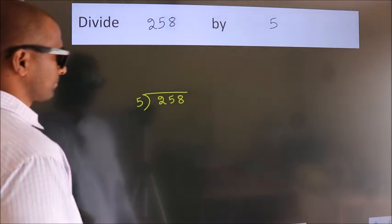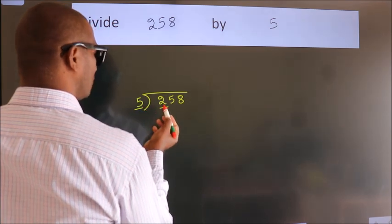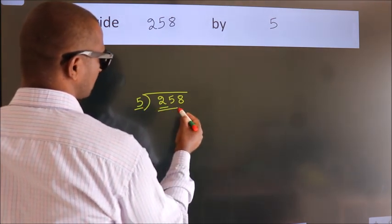Next. Here we have 2. Here 5. 2 is smaller than 5, so we should take 2 numbers. 25.